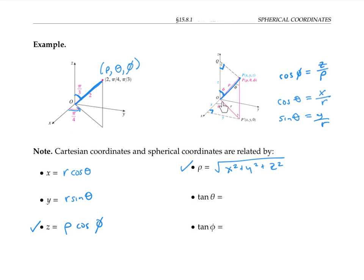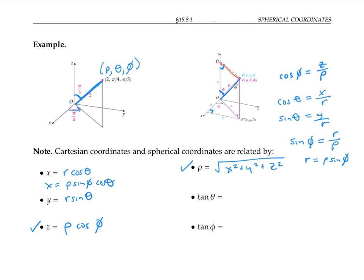Now r is the length of this line segment, but it's also the length of the line segment on top, since these four lines form a rectangle. So using this right triangle, and the fact that r is the length of the side opposite to phi, we write: sine of phi equals opposite over hypotenuse, that's r over rho, and therefore r equals rho sine phi. Substituting this in for r, we now have that x equals rho sine phi cosine theta, and y equals rho sine phi sine theta.